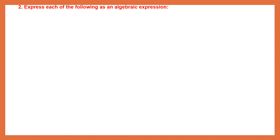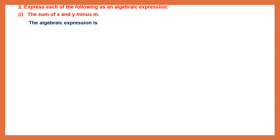Next question: Express each of the following as an algebraic expression. The sum of X and Y minus M. The algebraic expression is X + Y − M. We are using only signs and symbols with variables here.